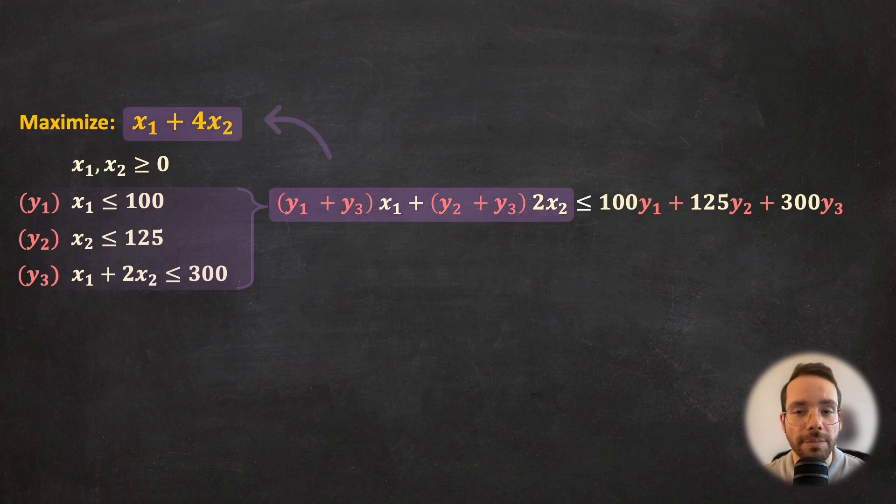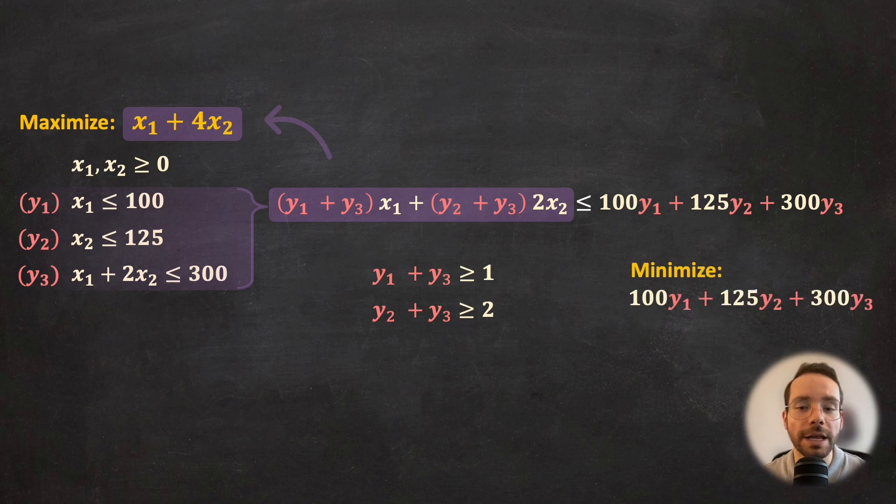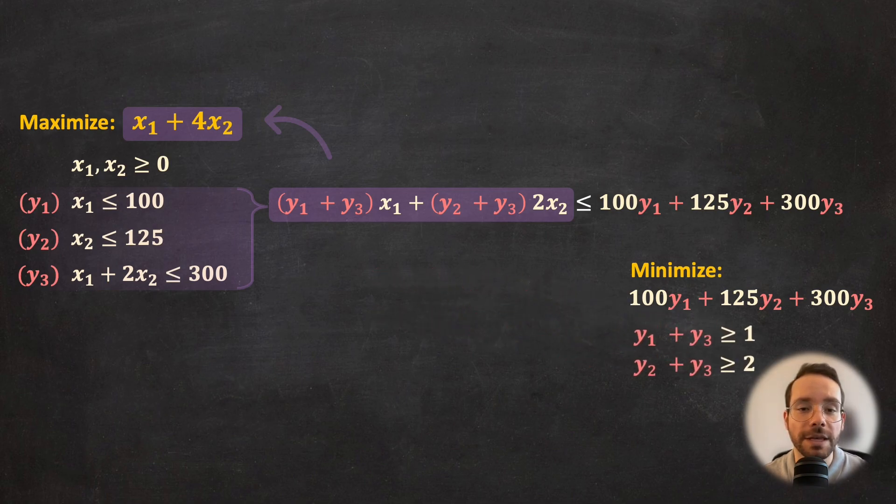This can be achieved by enforcing y1 plus y3 being greater than or equal to 1, and y2 plus 2y3 being greater than or equal to 4. And finally, we also want the best possible upper bound, which means for the right-hand side of this inequality, we need to minimize it. Now, putting this together and also remembering that we need y1 to y3 to be positive in order to preserve the inequality after multiplication, we're going to get a brand new linear programming problem.